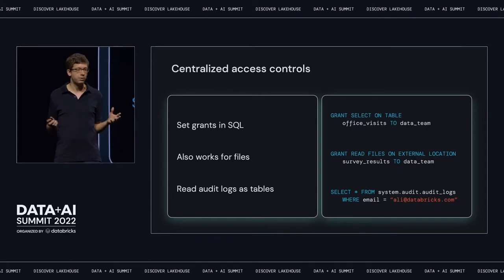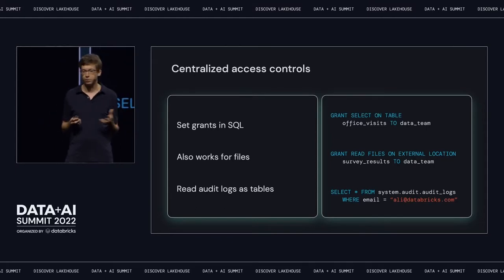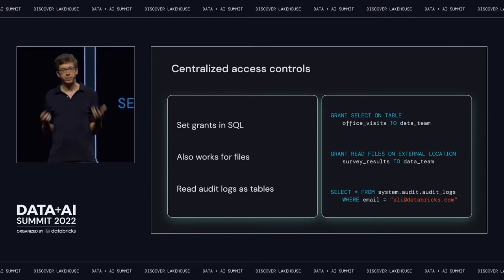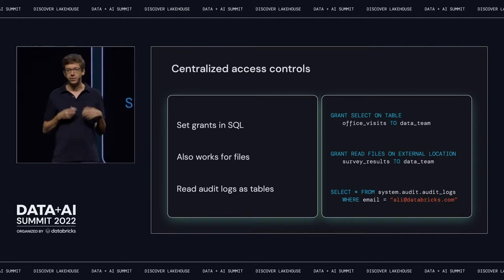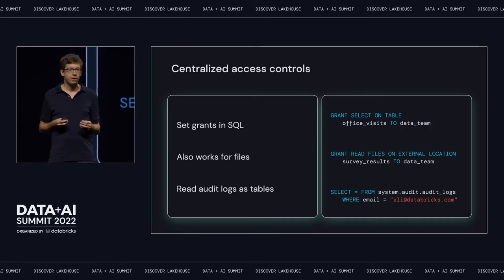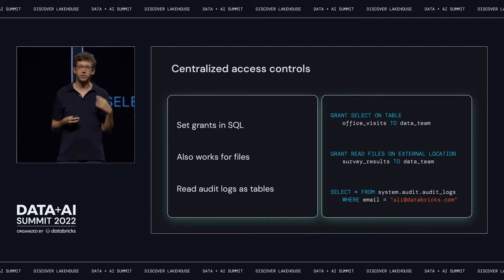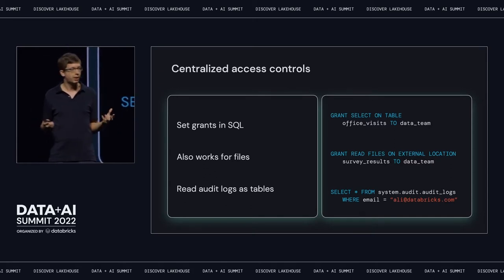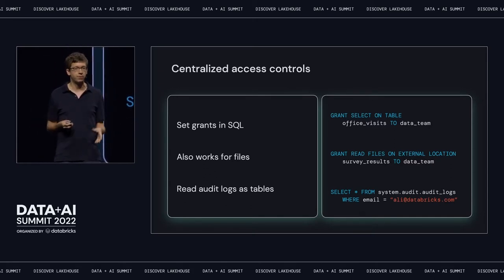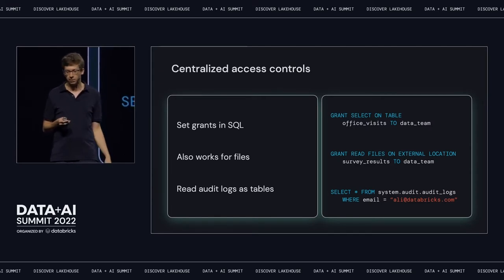So how do you use Unity Catalog? You can set up access controls using standard SQL, a REST API, or the UI. We've extended this beyond tables to other kinds of objects — for example, files in your cloud object store — in a manner that's consistent with the permissions you set on tables. We also have really easy access to audit information. It's just a system table that you can read with all the actions, so it's very easy to see everything happening on your Lakehouse.